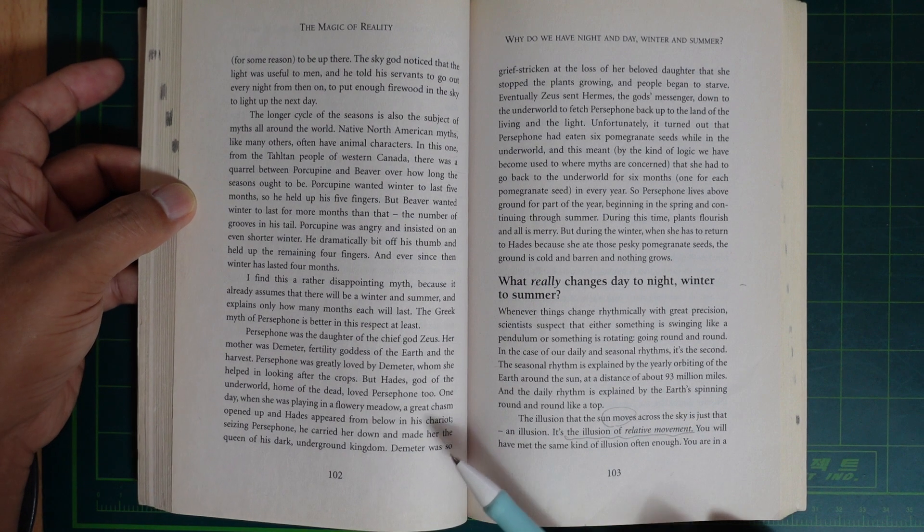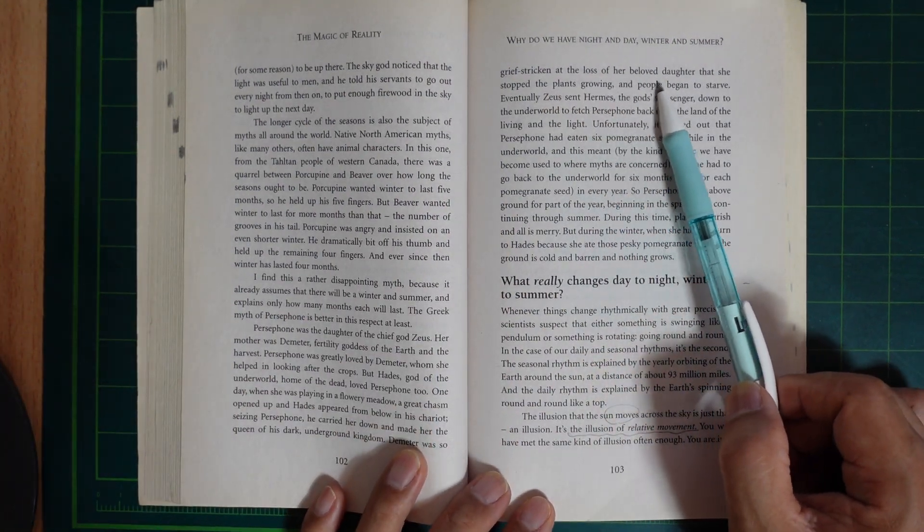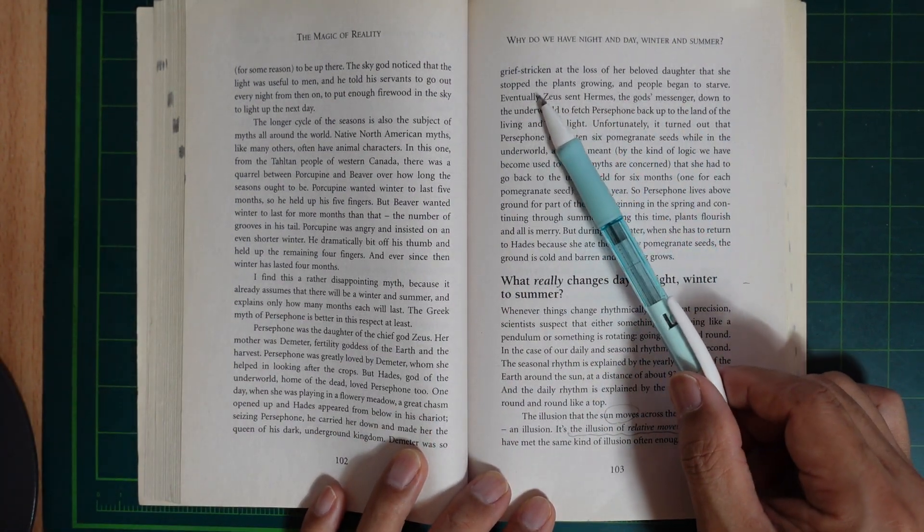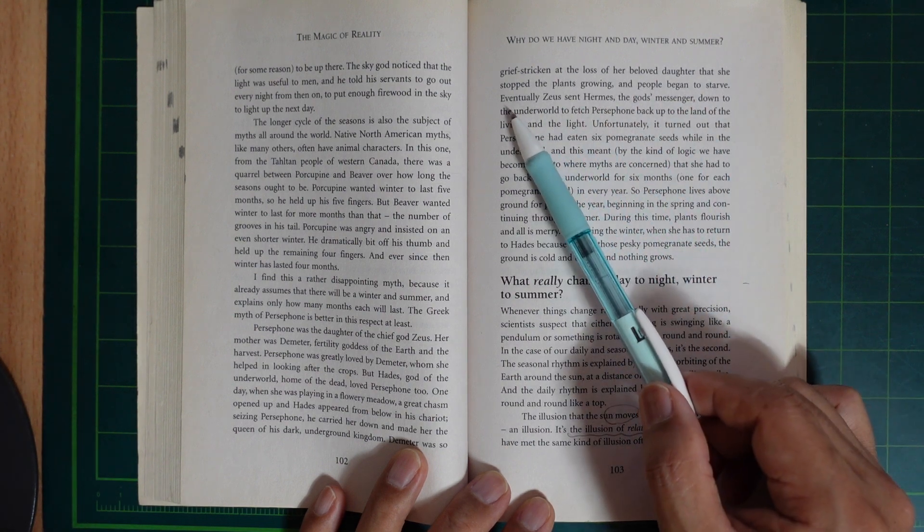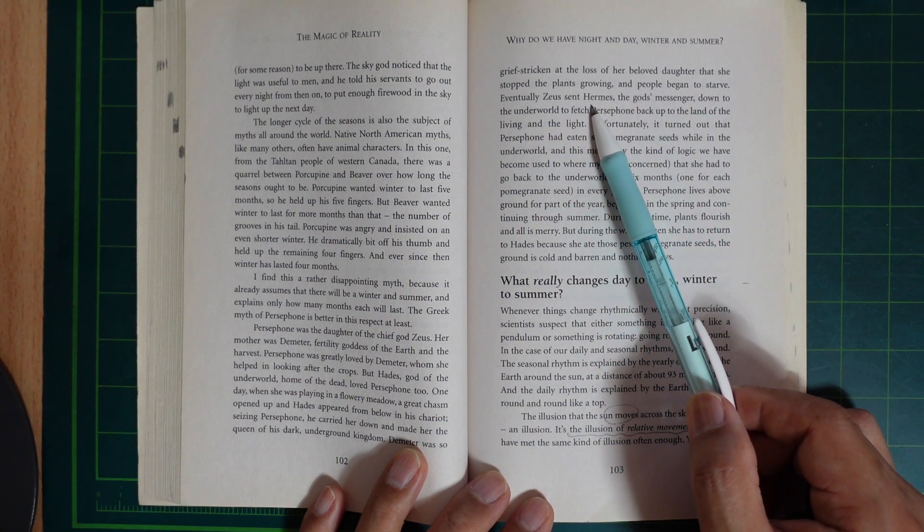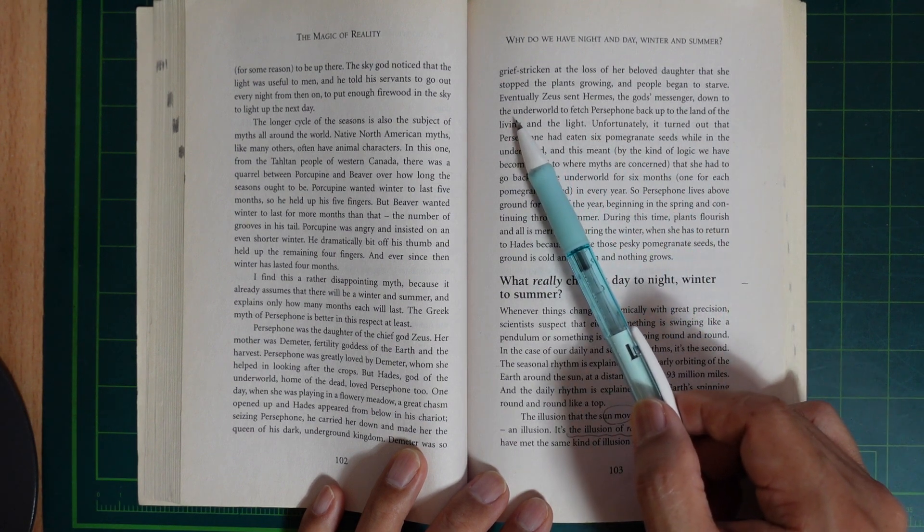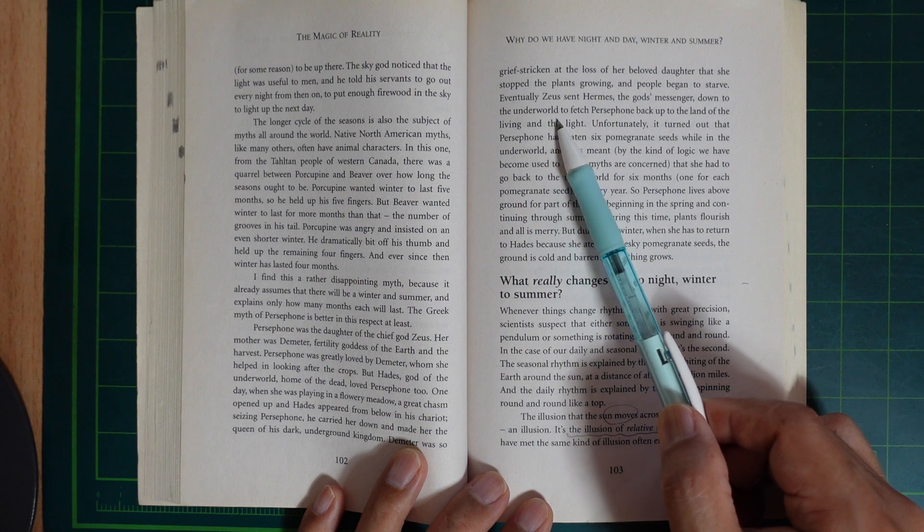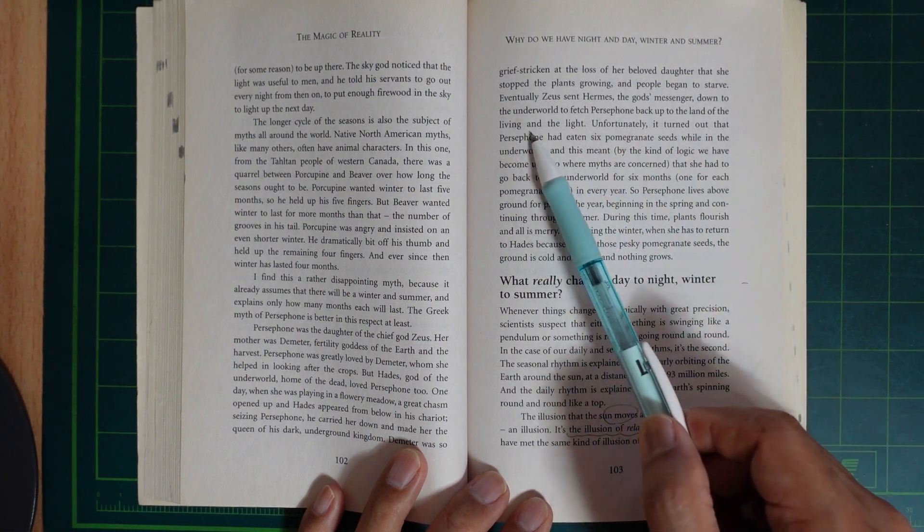Demeter was so grief-stricken at the loss of her beloved daughter that she stopped the plants growing and people began to starve. Eventually Zeus sent Hermes, the gods' messenger, down to the underworld to fetch Persephone back up to the land of the living and the light.